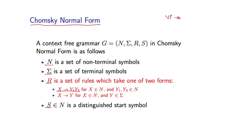For example, VP goes to VT, NP would be a perfectly valid rule because all three of these things are non-terminals. And I have two children, I always have to have two children under this definition.